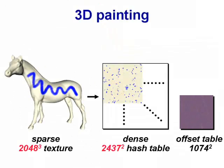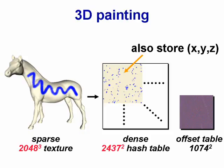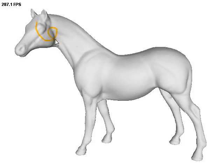Spatial hashing enables a very practical 3D painting scheme. We hash the 3D parameterized texture onto a 2D image. By storing position tags, we efficiently determine which pixels to update while the user moves the paintbrush along the surface.